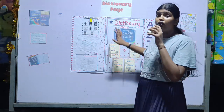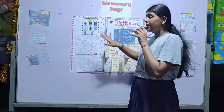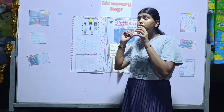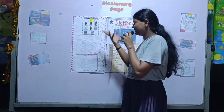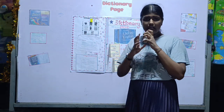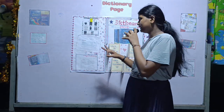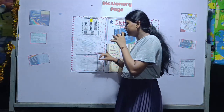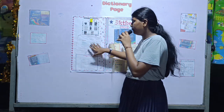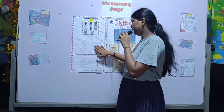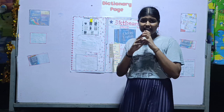And the last is parts of a dictionary page. When we are going to check a word in a dictionary, we have to consider their characters. They are guide words, plurals, antonyms, synonyms, meanings, example sentences, and parts of speech. Thank you.